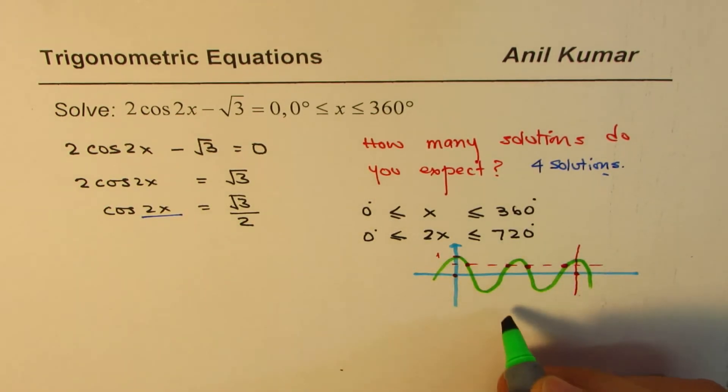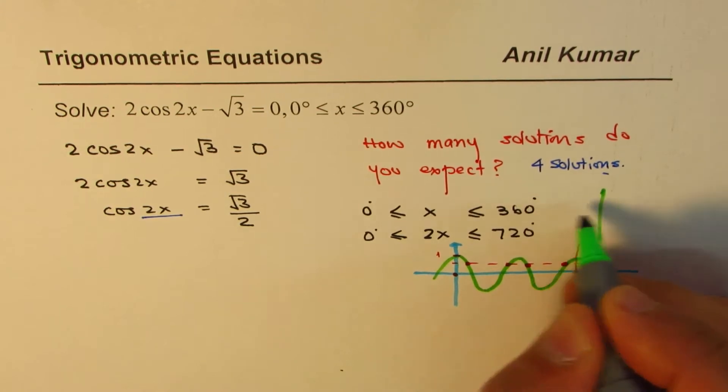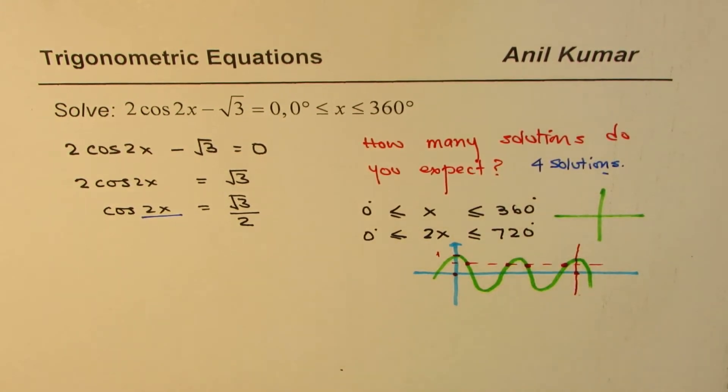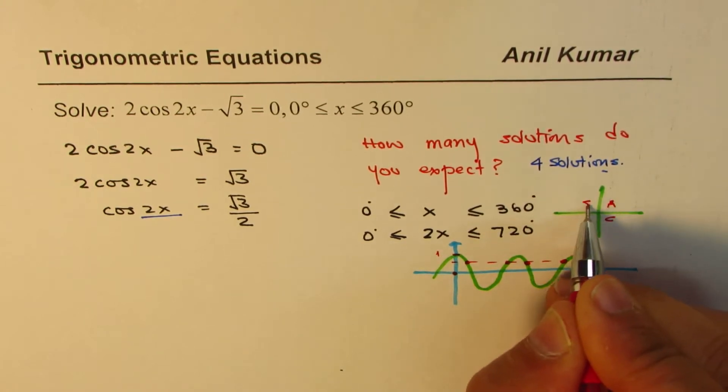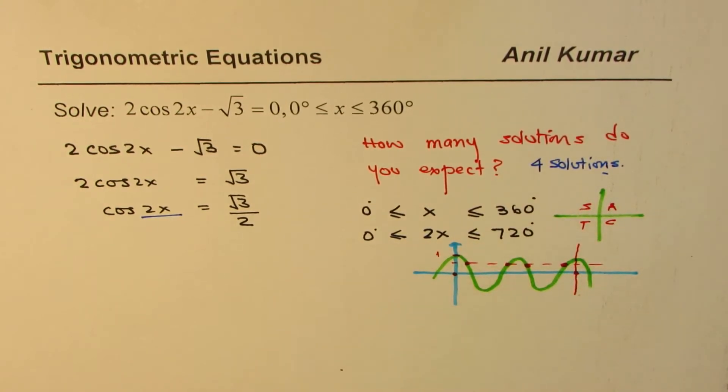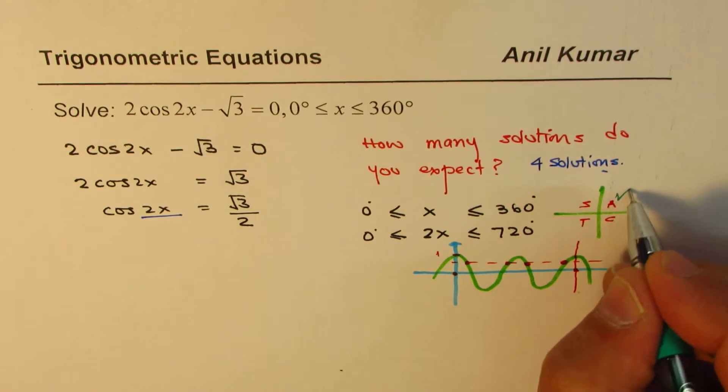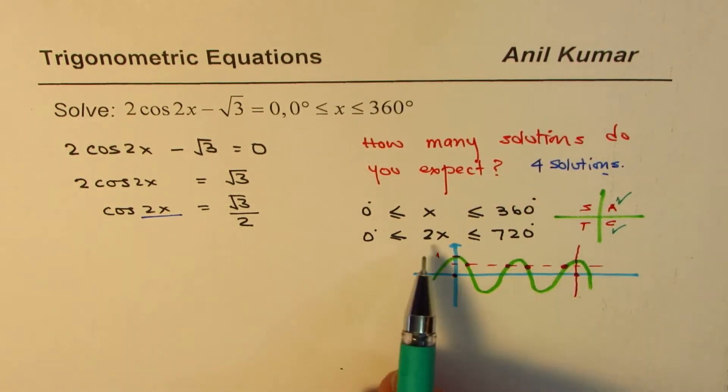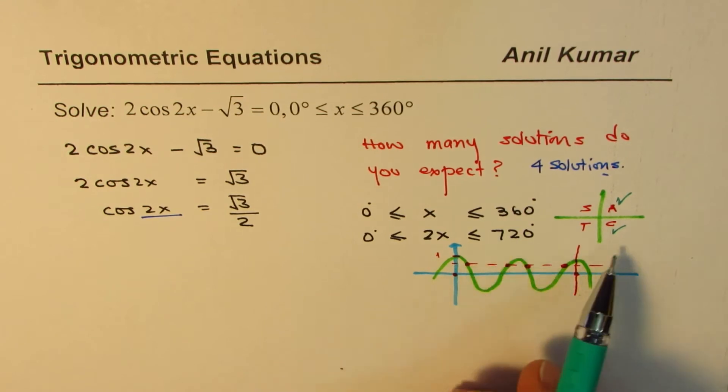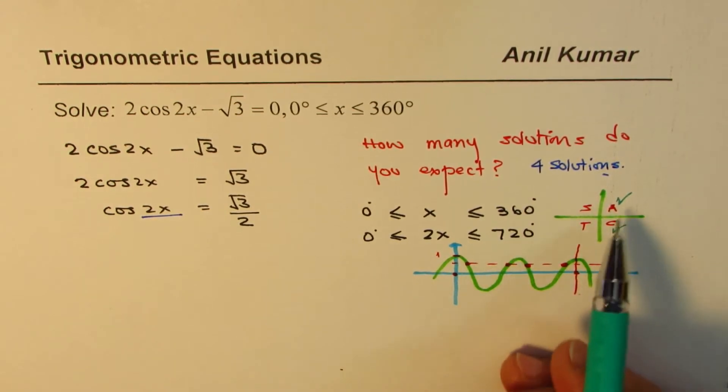We are looking for square root 3 over 2. Now positive. So cos is positive in which quadrants? Cos is positive in quadrant 1 and in quadrant 4 in these two quadrants. And now for 2x we have this domain. So we'll add 360 to our answers.